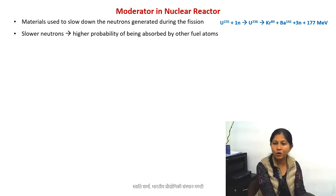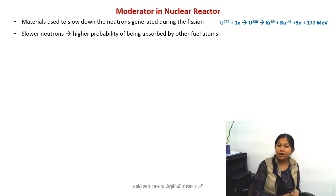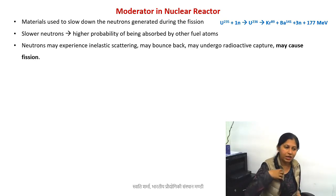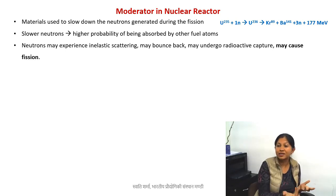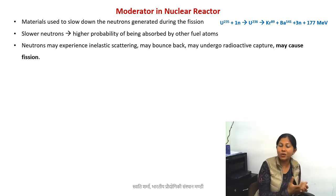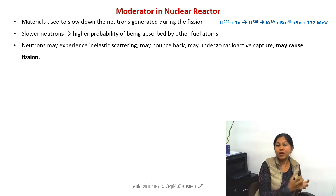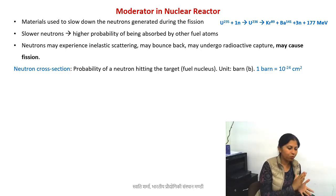When I say there is a higher probability of one certain event, there must be other events as well. When three neutrons are produced, they can hit the nucleus of another uranium-235 and experience inelastic or elastic scattering, they may completely bounce back, they may undergo radioactive capture, or they can cause fission.